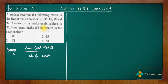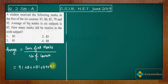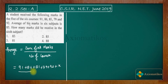So the sum of all marks: we have 91 in the first course, we have 86, we have 81, we have 79, and we have 92. But we don't have marks for the sixth subject, so we consider the marks of the sixth subject as x. So x is the marks of the sixth subject, over the number of courses, which is 6. This equals 85, because it was given that 85 is the average of the marks.